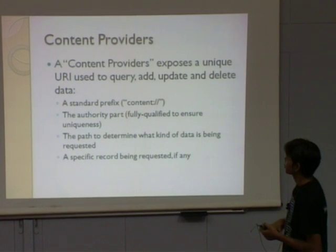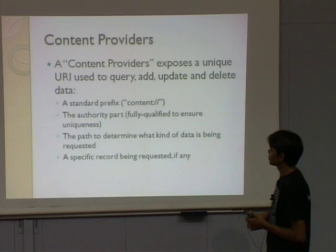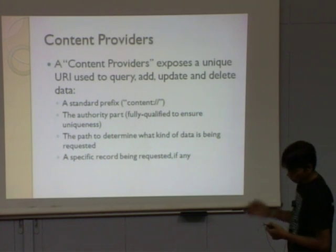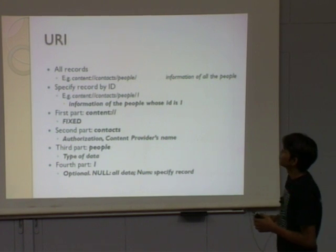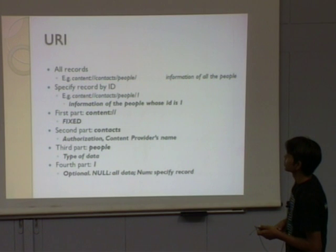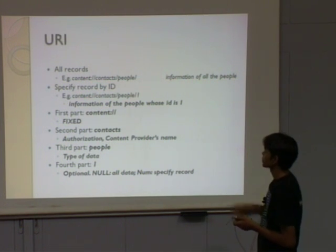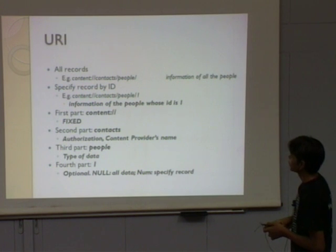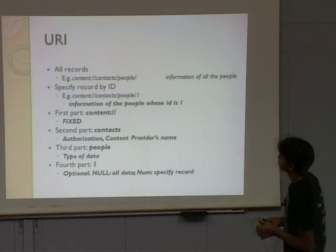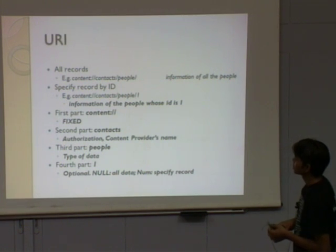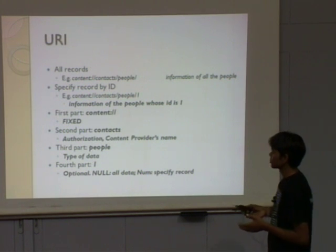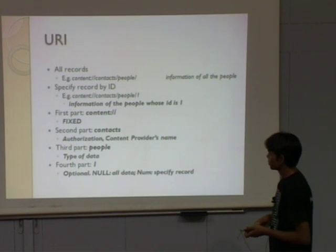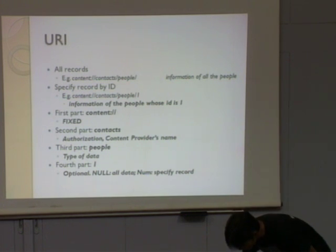The format of the URI is: a standard prefix 'content', an authority part, and the path to determine what kind of data is being requested and the specific record if any. For example, to show all contacts the URI is content://contacts/people. To show a person with ID 1, append 1 after people. The first part is always 'content', second is the content provider name (contacts), third is the data type (people), and fourth is the specific record ID.